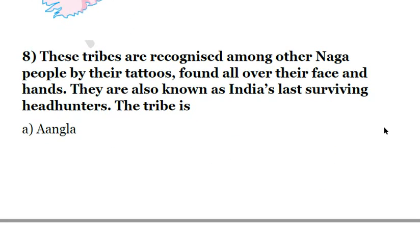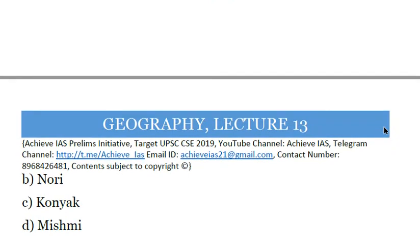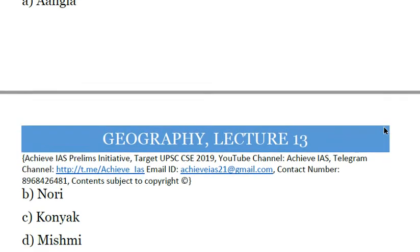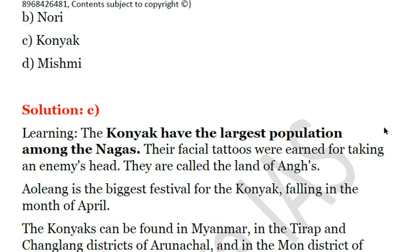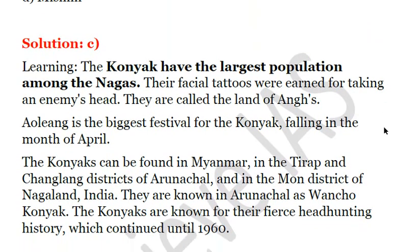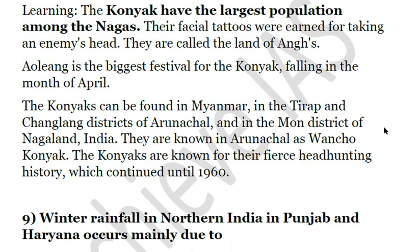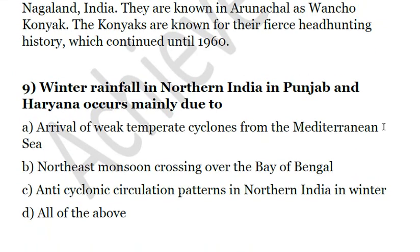Eighth question: These tribes are recognized among other Naga people by their tattoos found all over their face and hands. They are also known as India's last surviving headhunters. The tribe is A) Angla, B) Nori, C) Konyak, D) Mishmi. The correct answer is C — the Konyak tribe. They are the largest tribe among the Nagas and have facial tattoos earned after taking an enemy's head. They discontinued this practice, but were quite well-known until the 1960s for their fierce headhunting history.